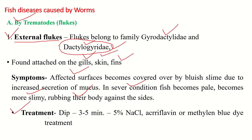Treatment for external flukes includes a dip treatment for three to five minutes in a five percent salt solution. Alternatively, fishes can be kept in water containing 10 ppm acriflavine for two to three days, or methylene blue dye treatment can also be used for this type of disease.